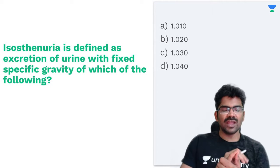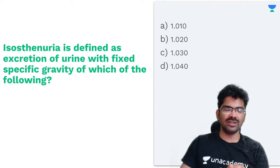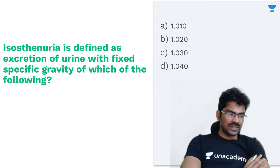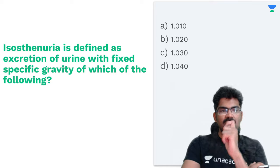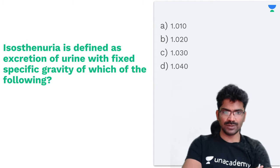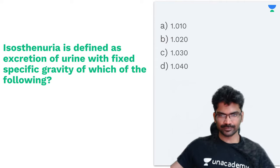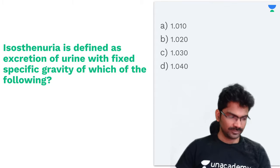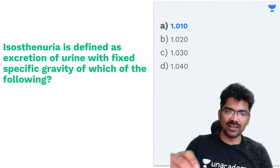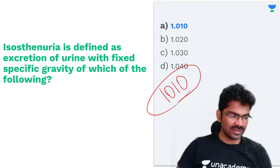Isosthenuria is defined as excretion of urine with a fixed specific gravity. This is a number-based question — what is the cutoff value for isosthenuria? Neha is saying it is 1.010. Neha is correct, the answer is 1.010 — you can easily remember this as '10-10'. Excellent, Neha!